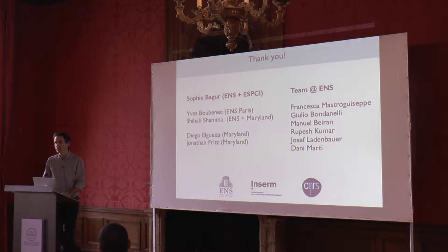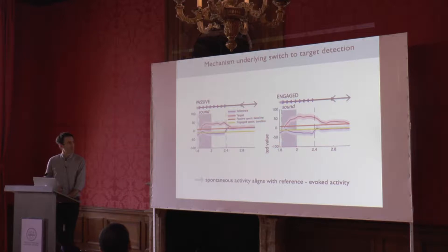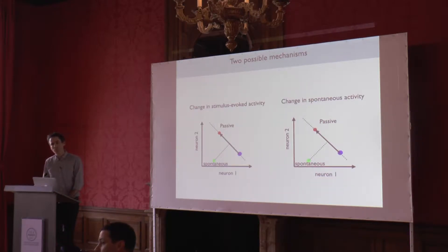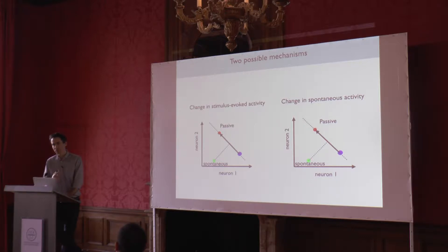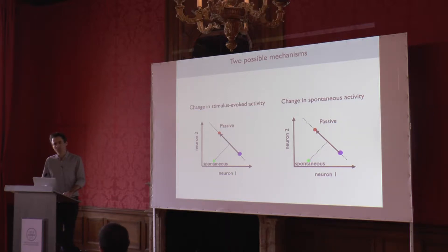Question: Can we understand this in terms of saying that the network configures itself so that any variation would actually be information about the target? Response: That's right. The network somehow reconfigures itself so that any variation along the specific direction is information about the target. Here we're looking at one direction out of n directions — there are still differences between spontaneous activity and reference-evoked activity, but along the other dimensions. So just to rephrase: it means that somehow it makes sure that it encodes behaviorally relevant information along this specific axis. Exactly.